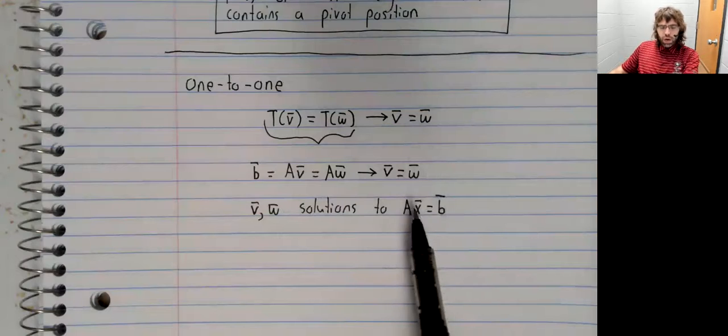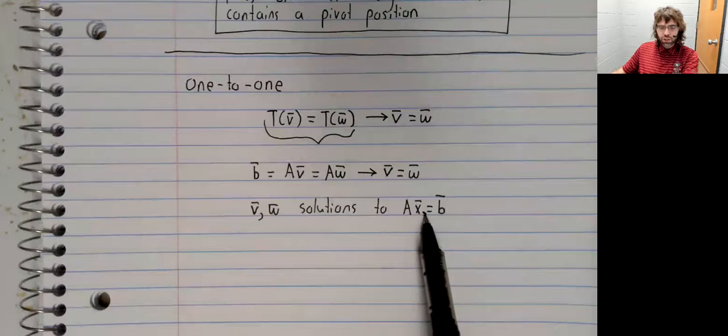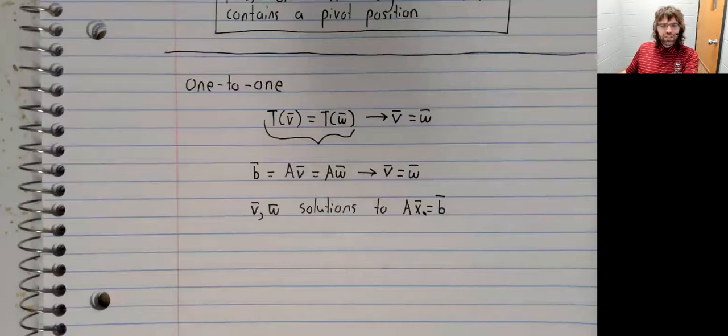Well, what are the options here? This matrix equation has one solution, in which case this transformation is one to one, or it has infinitely many solutions, in which case it isn't.